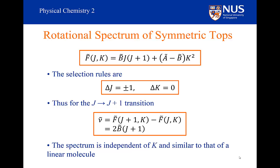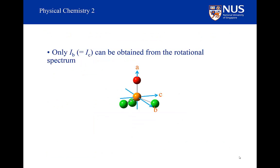This simplifies what the spectrum looks like, but it also means that if the spectrum had depended on K, we could have obtained information about the moment of inertia around the A axis. Unfortunately, we can't get any information about the A axis moment of inertia from the rotational spectrum alone.